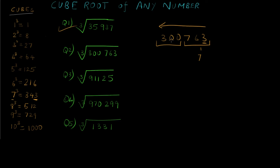For the second group we need to find a cube value that is less than 300 and closest to 300. That is 216, which is 6 cubed. So the second digit is 6, and there you go — the cube root of 300763 is 67.